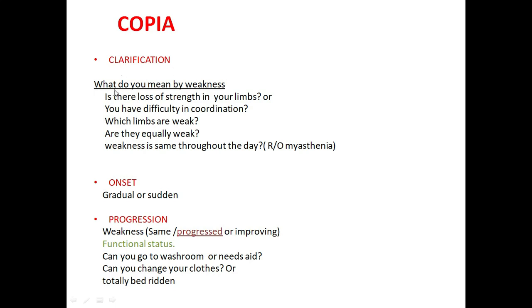Ask the patient: what do you mean by weakness? Give time to the patient to describe it. Is there loss of strength in your limbs or do you have difficulty in coordination? Then ask which limbs feel weak — are they equally weak? If the patient reports lower limb weakness, also ask about upper limb involvement, and whether the weakness is the same throughout the day, which will help rule out myasthenia.